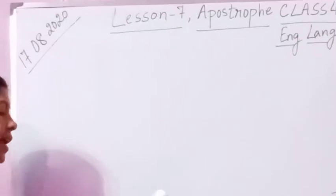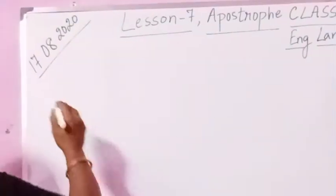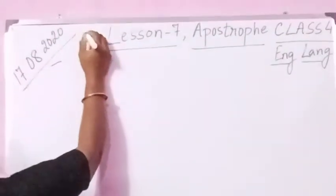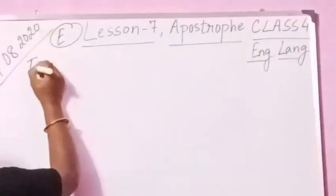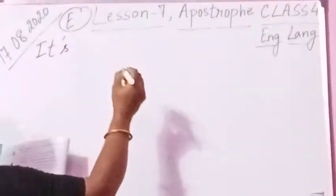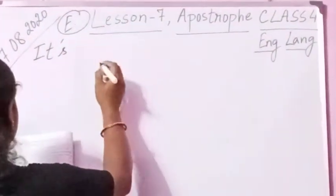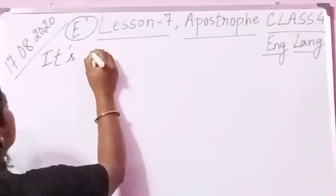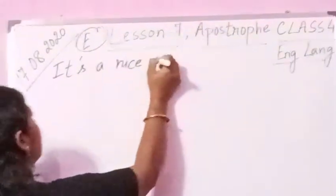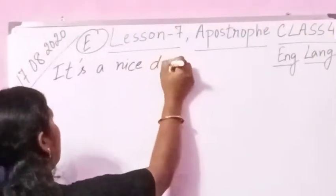So let us start exercise E. The first sentence is: it is a nice day today. We write the contracted form: it's a nice day today.